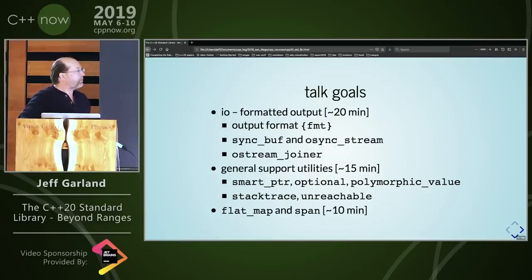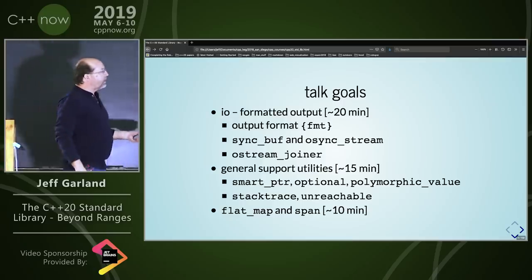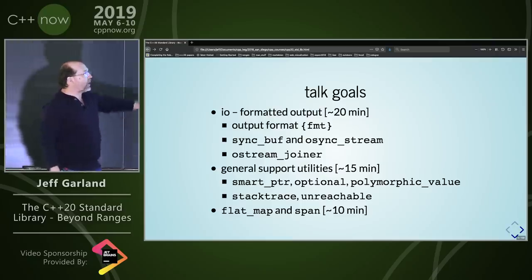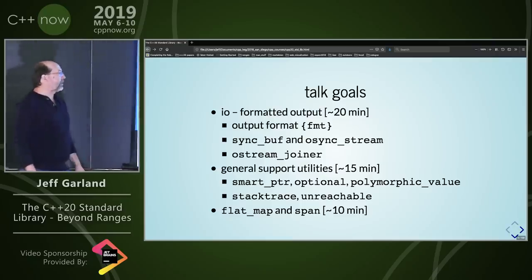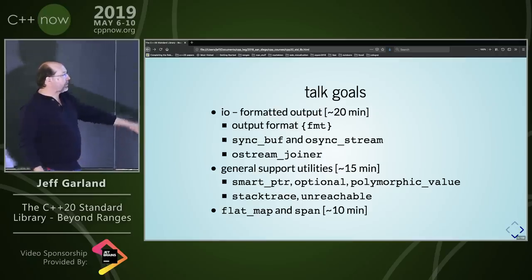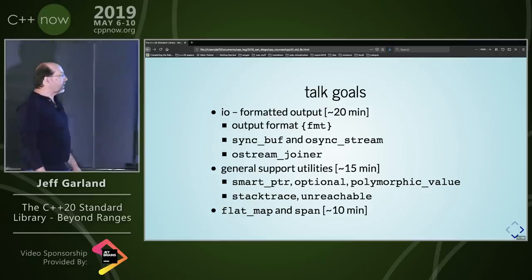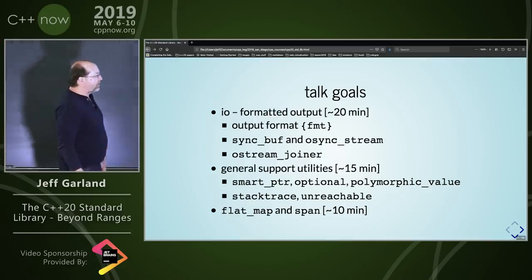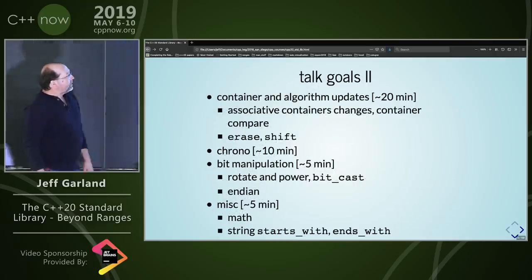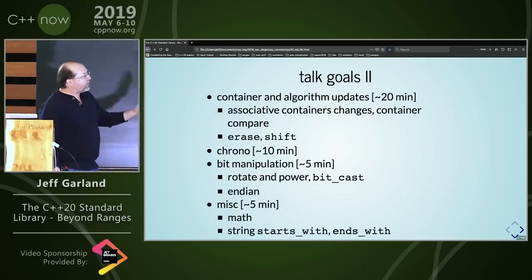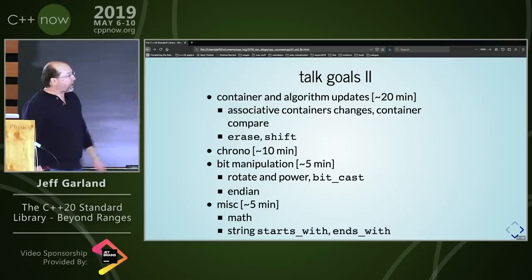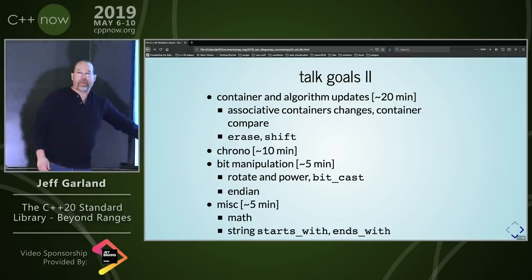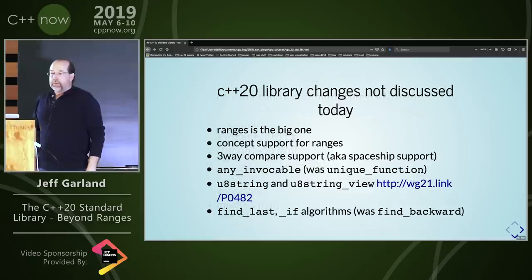Here's the list of goals. There's a bunch of stuff on I/O and new facilities there. FMT format is the big one — we'll probably spend more time on that library than any other. General support utilities, there's a whole list of smaller and medium-sized things. Flat map and span are some larger container-ish view type things, and then a bunch of things with containers and algorithms. There's a major update to chrono, and then some smaller stuff at the end.